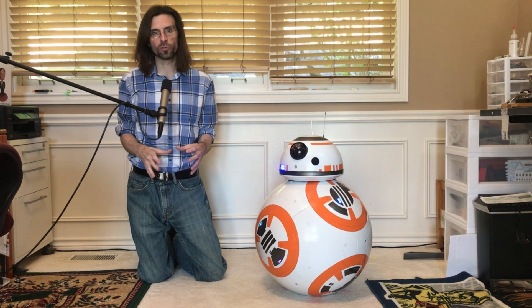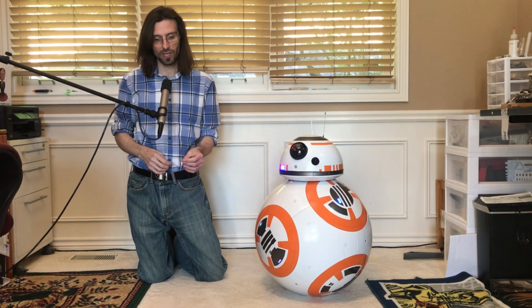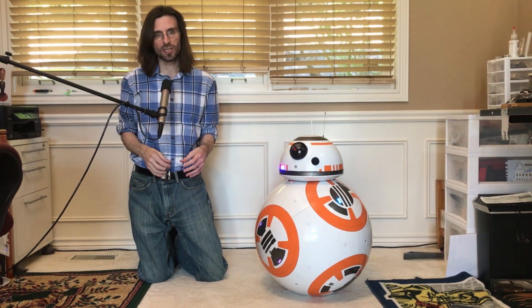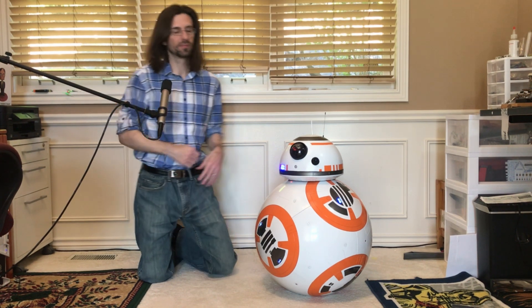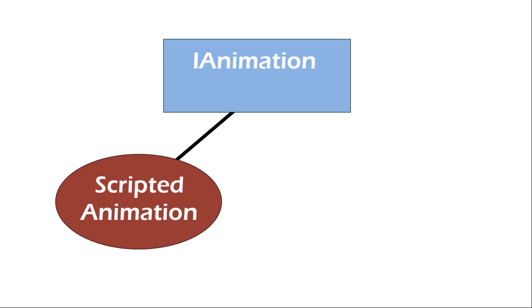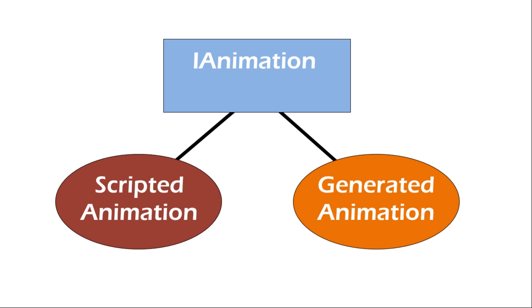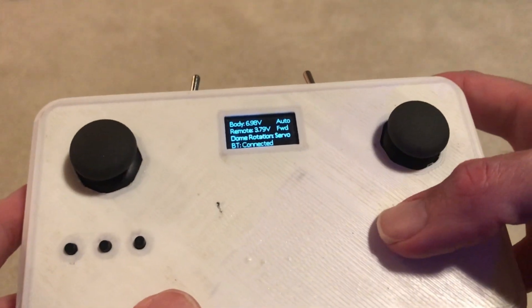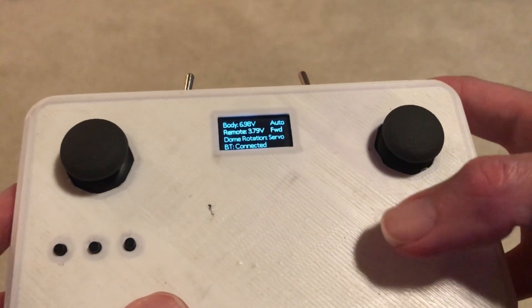However, to prevent the droid from looking too canned and to avoid seeing the same animation over and over, and to prevent manually creating a ton of animations, I took the animations work a step further. In the code there's an IAnimation interface, and the concrete class ScriptedAnimation inherits from it. There is another implementation — GeneratedAnimation — which uses passed-in heuristics to generate the animation script on the fly for completely unique animations each time. Pressing this button on the remote will trigger generated animations, as seen here.